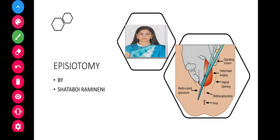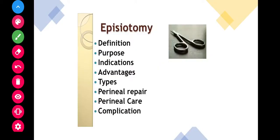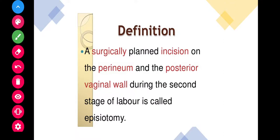Hi everyone, today I am going to explain about episiotomy. Let us see the definitions of episiotomy. Episiotomy is a surgically planned incision on the perineum and the posterior vaginal wall during the second stage of labor.